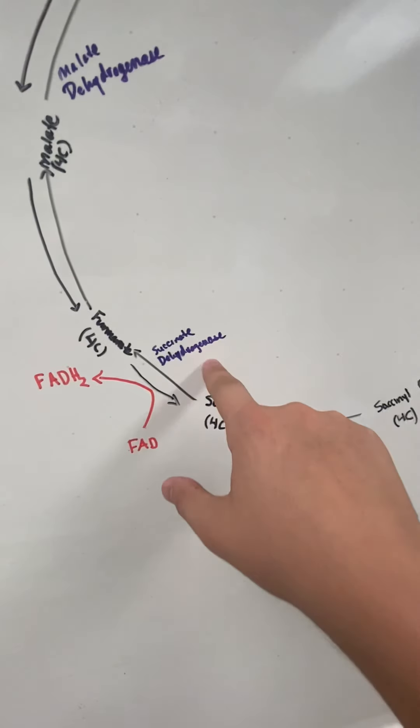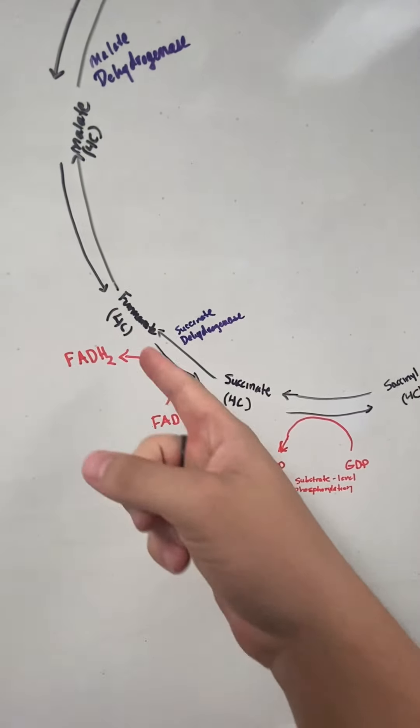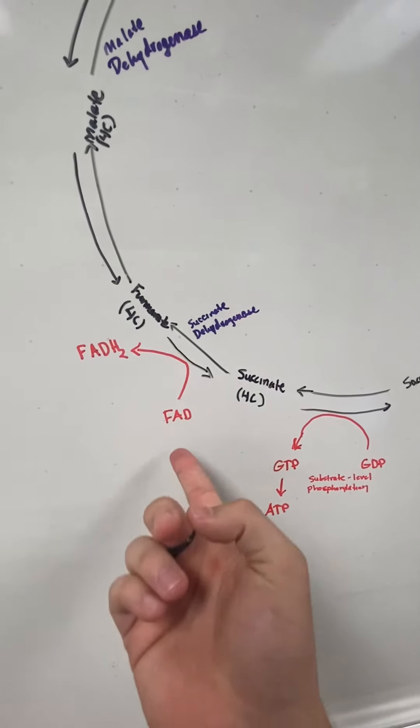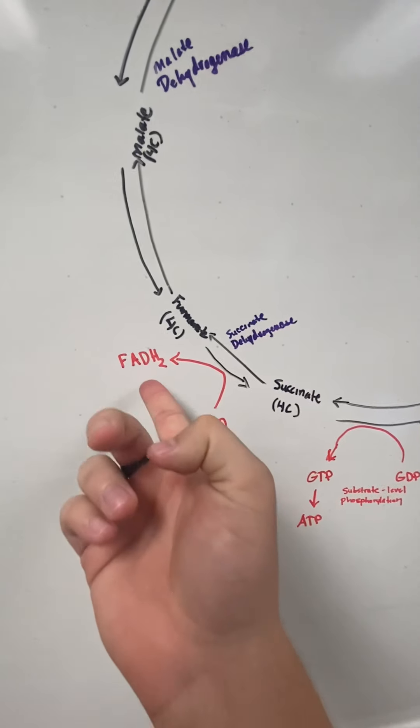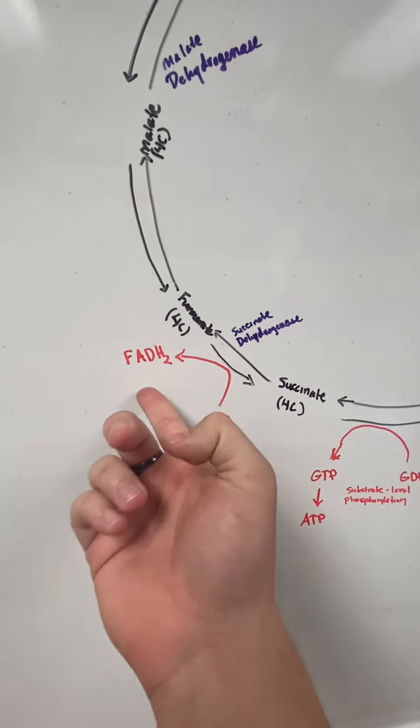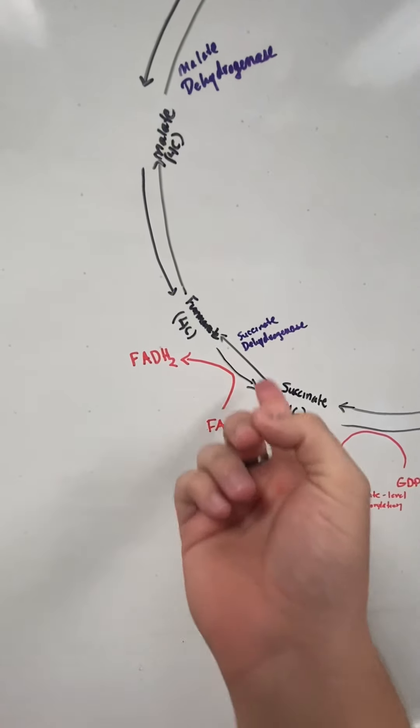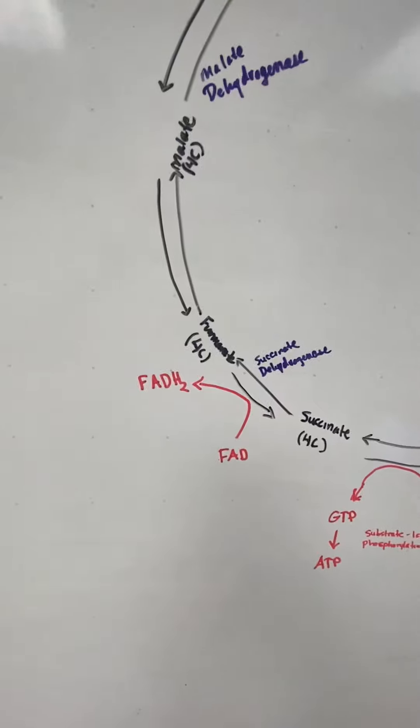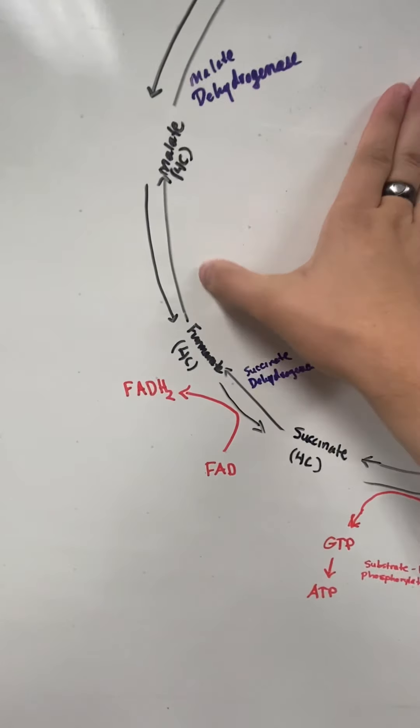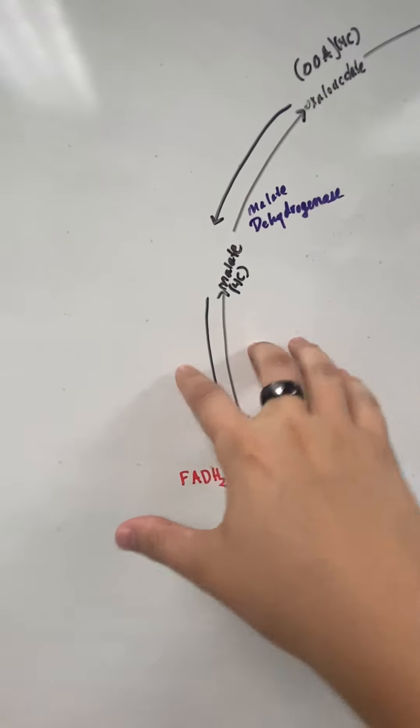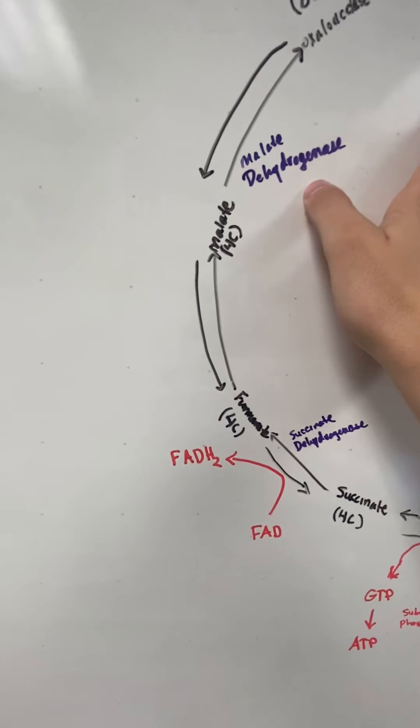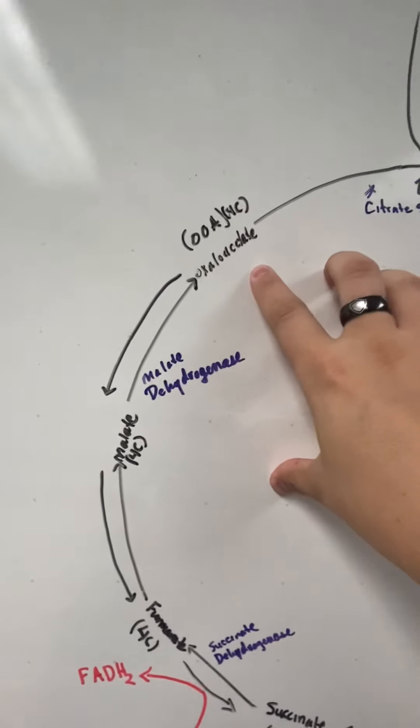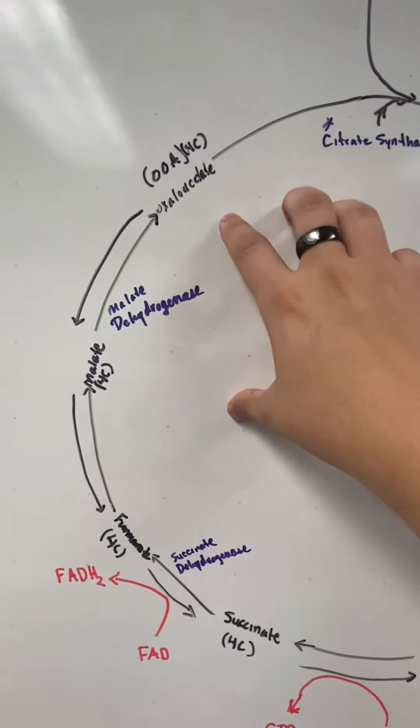We have succinate dehydrogenase, and it turns it into fumarate. In that process, we get from FAD to FADH2, which is another energy source that gets pumped out. You can think the F and the fumarate, they're together. Then we're going to go to malate, which is still reversible. Then we're going to have malate dehydrogenase to give us the oxaloacetate. And from there, we're done.